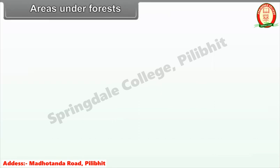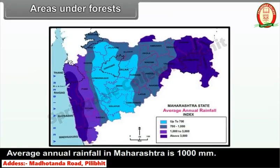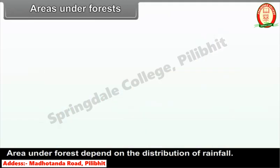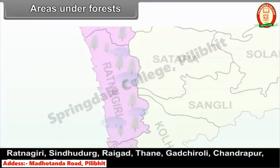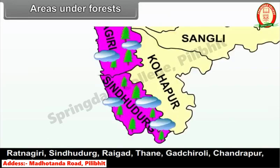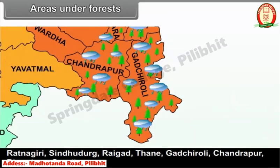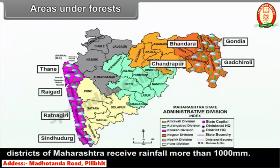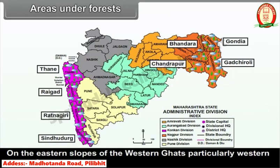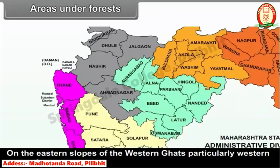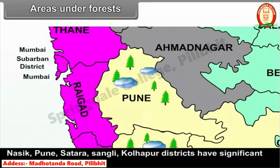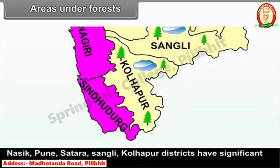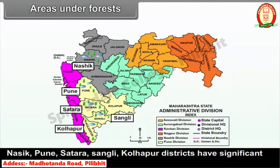The average annual rainfall in Maharashtra is 1000 mm, and the area under forests depends on the distribution of rainfall. Districts including Ratnagiri, Sindhudurg, Raigad, Thane, Gadchiroli, Chandrapur, Bhandara, and Gondiya receive more than 1000 mm of rainfall. On the eastern slopes of the Western Ghats, particularly the western parts of Nashik, Pune, Satara, Sangli, and Kolhapur districts, there are significant areas under forests.